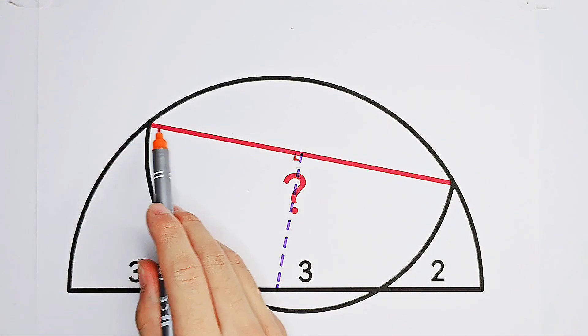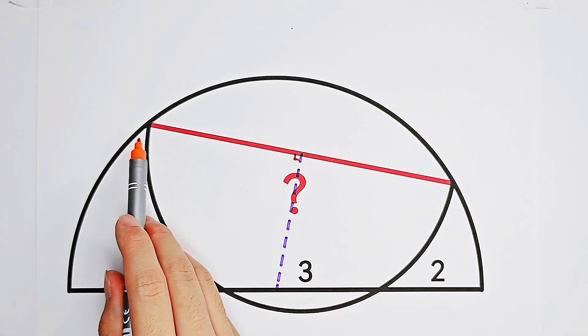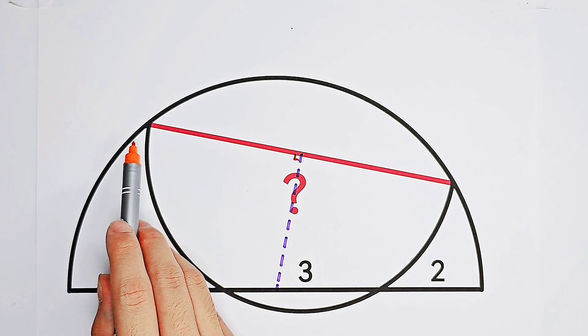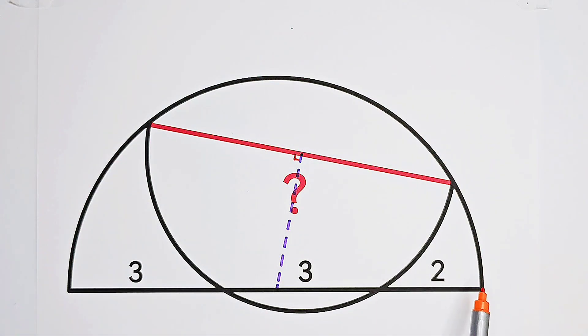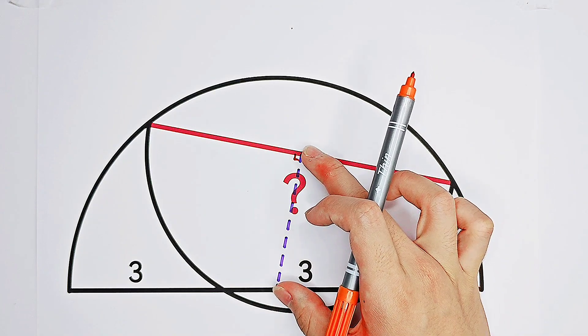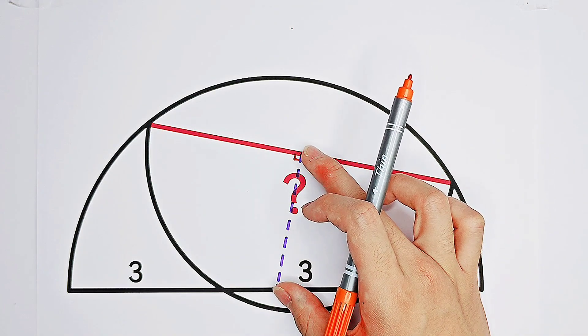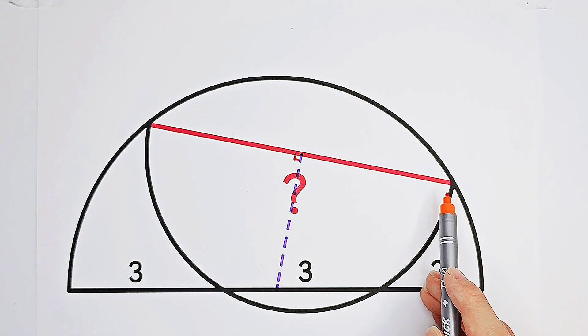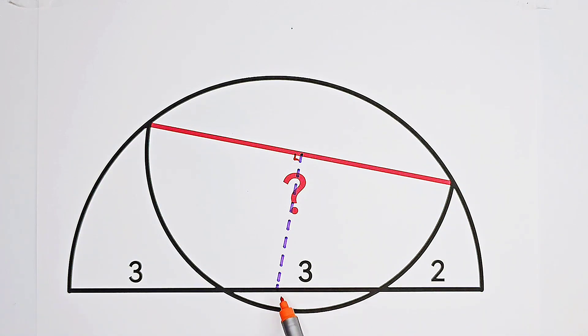You see, the diameter of the small semicircle is actually a chord of the big semicircle. And this purple line segment is on the perpendicular of this chord. And the perpendicular of every chord in a circle always runs through the center. So it's been proven.